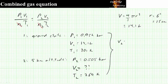So now taking all of this data, rearranging the combined gas equation to solve for V2, and substituting in all our values, we find that V2 is equal to 23.8 liters.